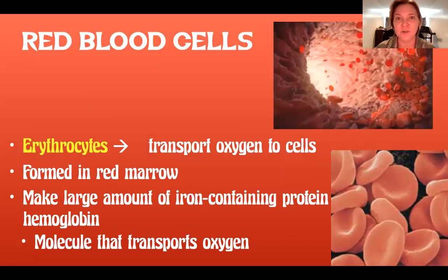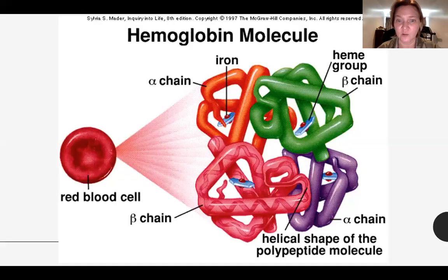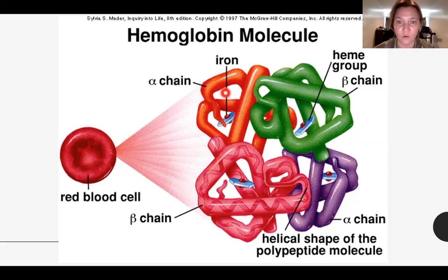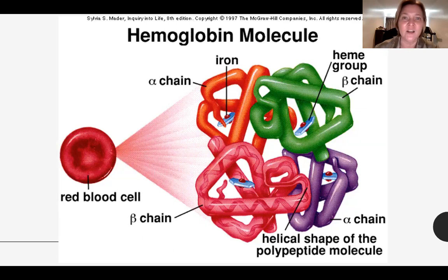Hemoglobin is composed of four polypeptide chains. You can see the hemoglobin molecule consists of four chains — one in orange, green, red, and purple — and there is one iron atom in each polypeptide chain. So for each hemoglobin molecule, there are four polypeptide chains, each containing one iron atom, and the iron is what actually transports the oxygen molecule.